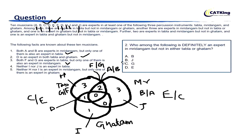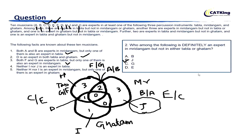Question 2: who among the following is definitely an expert in Mridangam but not in either Tabla or Ghatam? Definitely in Mridangam only is J. So option B is the correct answer.